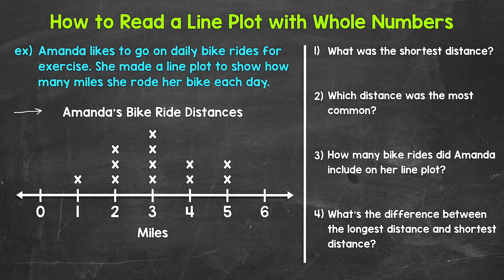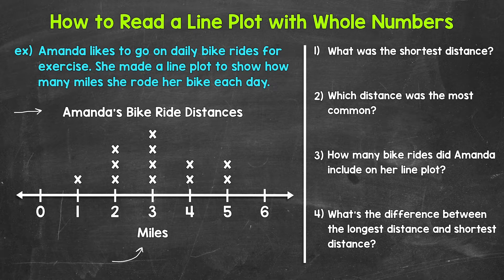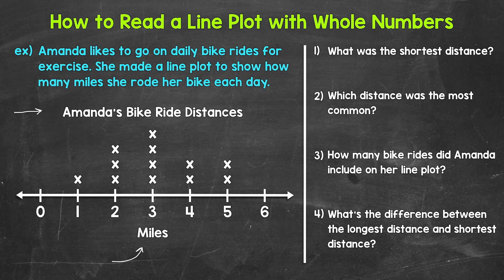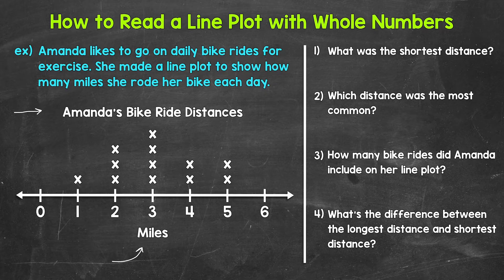We have a number line with X's above it. The number line in this example starts at zero and counts up to six by one. Underneath the number line, we have miles — that's our unit of measure, telling us the numbers represent miles. Each X represents one bike ride. For example, there are two X's above four, meaning Amanda had two bike rides that were four miles.